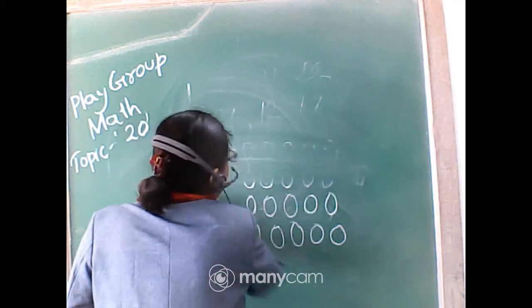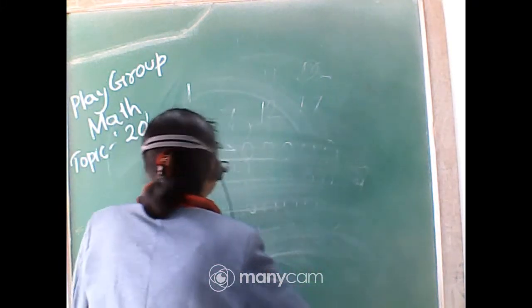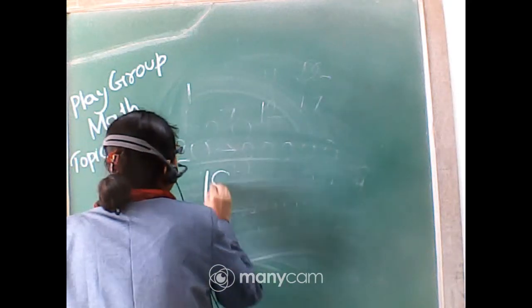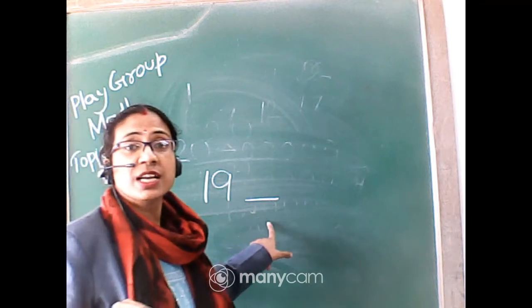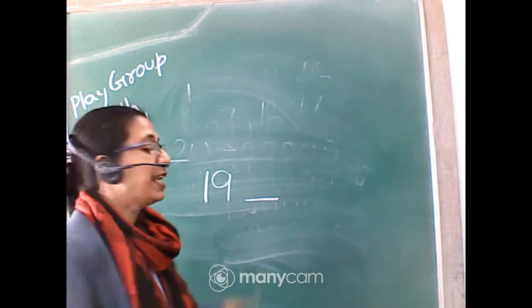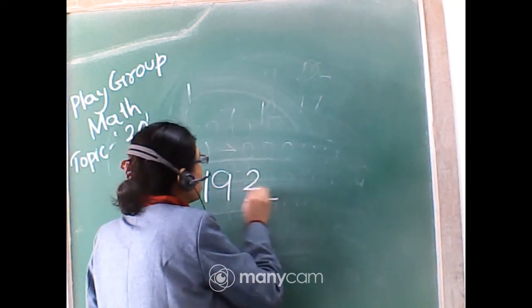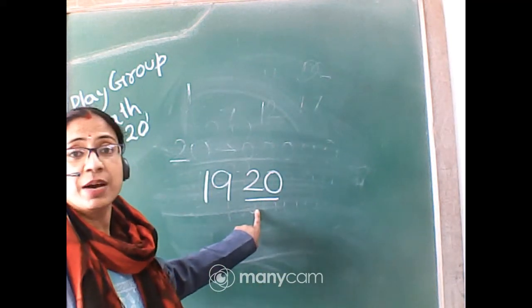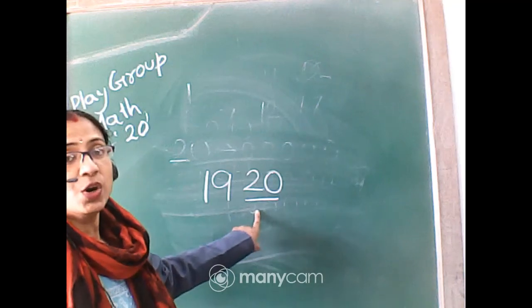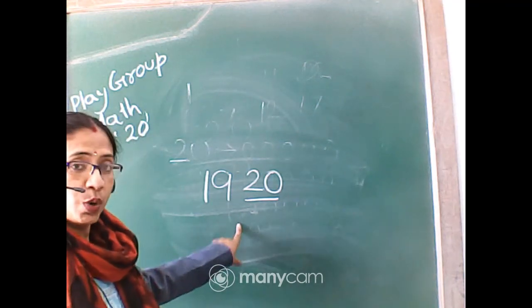And another one: 20 is the just after number of 1, 9, 19. If I give after number, so it is the after number of 19, 20, 20. Okay?